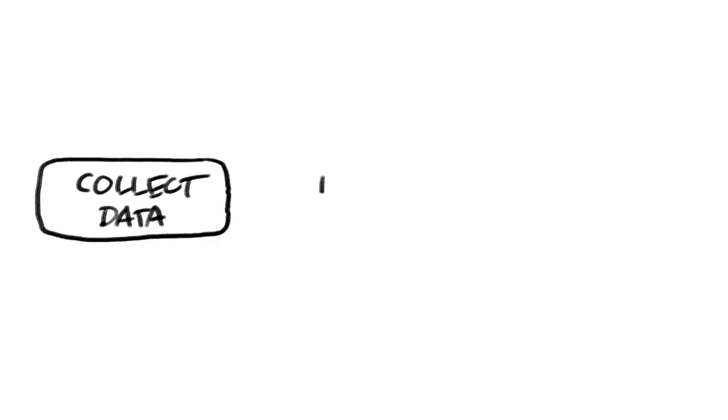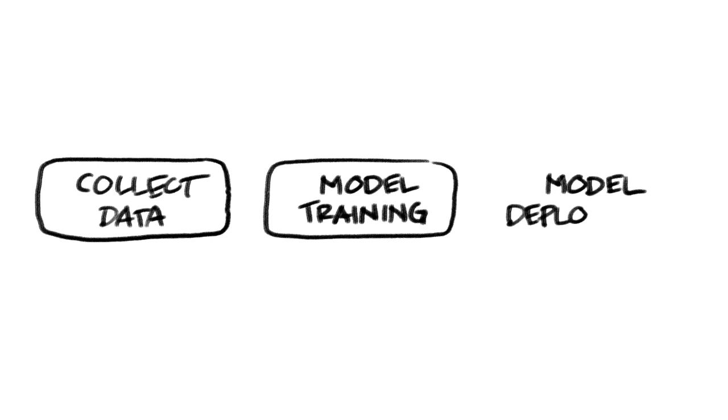The essential steps in any machine learning project involve collecting data, training a model, then deploying that model. Decision trees are no different.